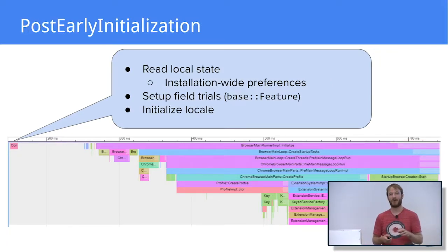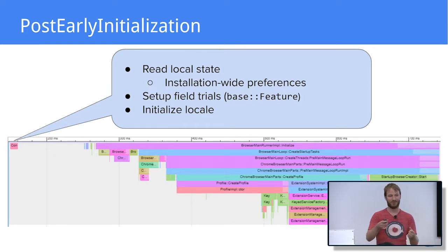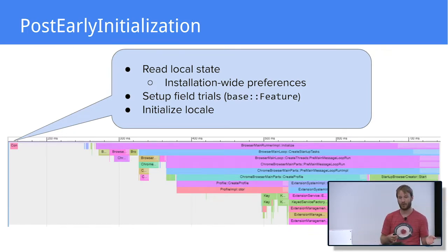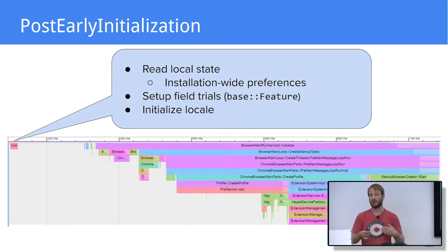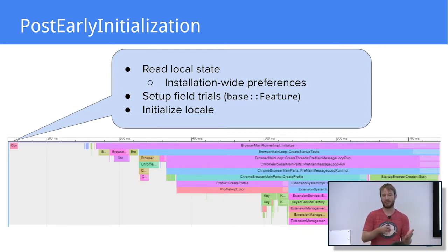After that, we run a function called post early initialization. In this function, we read the local state from disk — the local state is a set of preferences that are not profile specific — and we set up field trials. Field trials control base features; they control everything that Finch can enable dynamically. It's interesting to know that they are initialized so early because it means you can run an A/B experiment or enable/disable a feature very early in Chrome startup. For example, that allows you to test if a change in the initialization of a component affects startup time by running an A/B experiment.